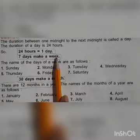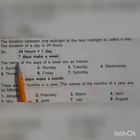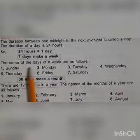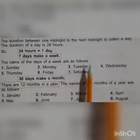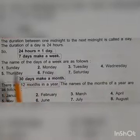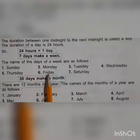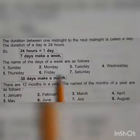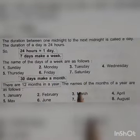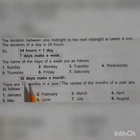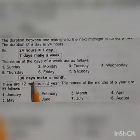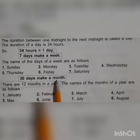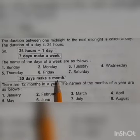7 days make a week. The names of the 7 days are: Sunday, Monday, Tuesday, Wednesday, Thursday, Friday, Saturday. When 30 days pass, that makes a month.